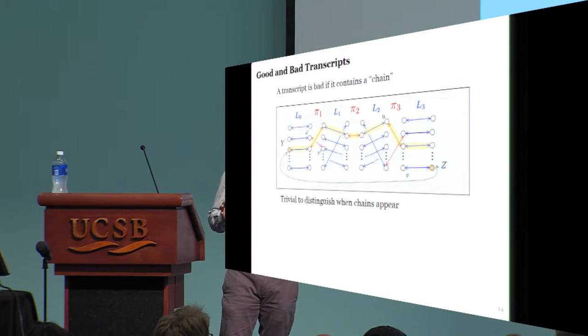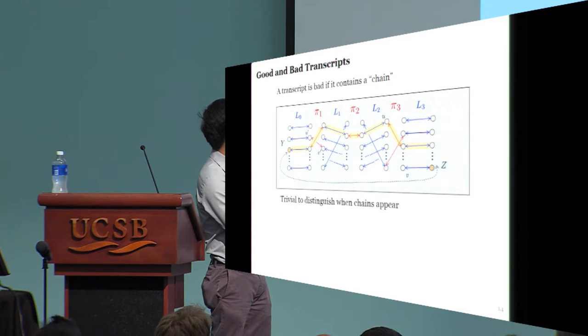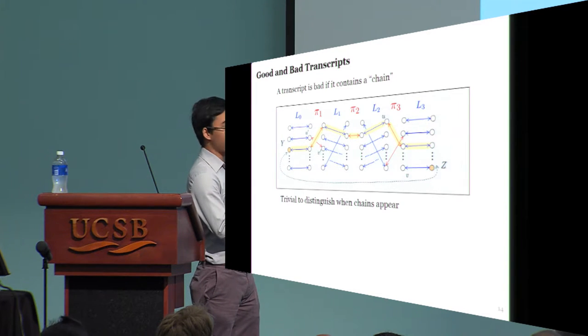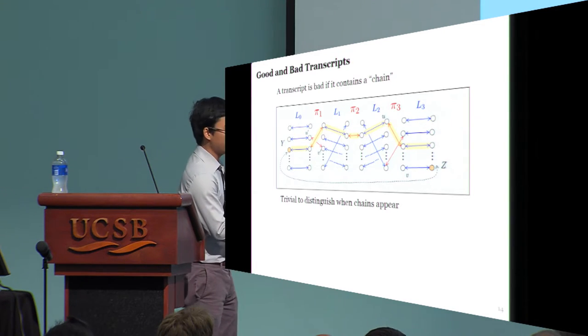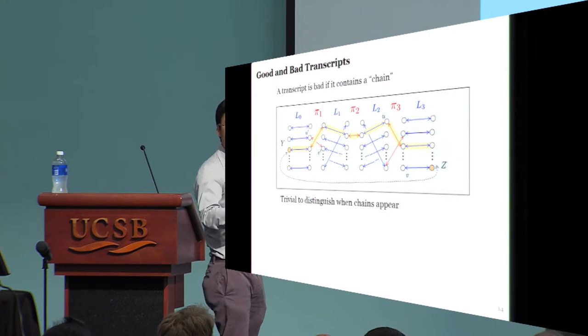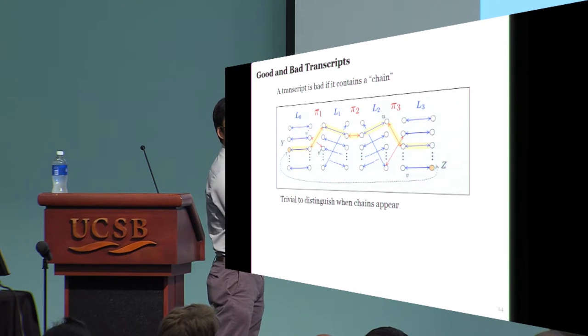Now, we say that an extended transcript is bad if its graph contains some part that we call a chain, as highlighted here. For bad transcripts, it's pretty easy to distinguish. For example, here, this transcript must come from the ideal world. Indeed, initially, the transcript tells us that if you encrypt Y, you should get Z, but then when you actually do the encryption process by following the chain, we end up with a completely different ciphertext, which is a contradiction.